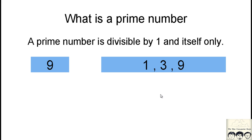When I say 9, for example — 9 has 3 factors, meaning 9 is divisible by 3 numbers. As per the definition, a prime number is one which is divisible by 1 and itself. 9 is divisible by 1 and itself, but it is also divisible by 3. So it is not a prime number.